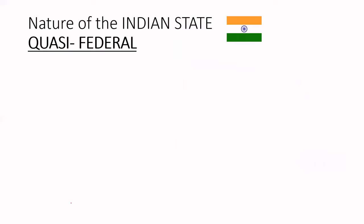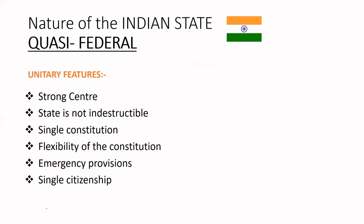What are the features that make India quasi-federal? Looking at its unitary features: there is a strong center, the state is not indestructible, there is a single constitution, there is flexibility in the constitution, emergency provisions are provided, and there is a single citizenship — meaning we are a citizen of India and not of a particular state like Maharashtra or Assam.